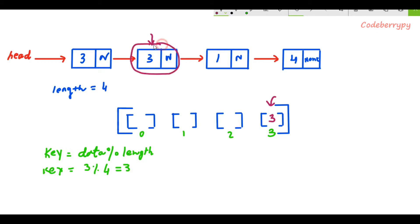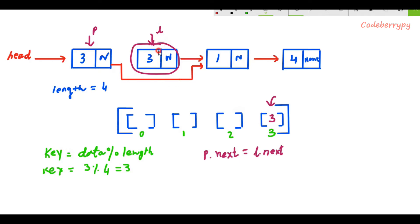Once we detect a collision we need to remove that duplicate node from the linked list. We do this using two pointers: the first pointer is called l, and the second is a backward pointer called p, which is always behind l. To delete the node, we get the reference stored in l's next and assign it to p's next — so p.next = l.next. This node is then no longer referenced and gets flushed out. We then shift l to l.next.